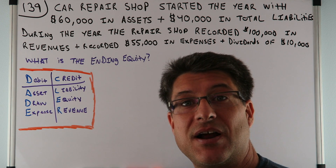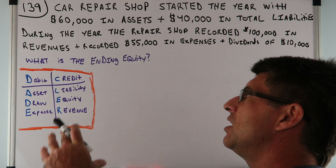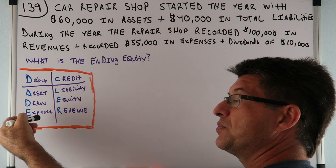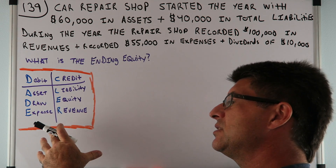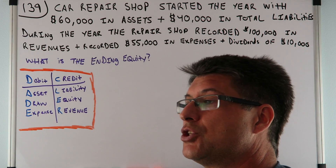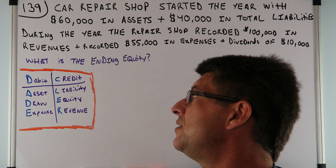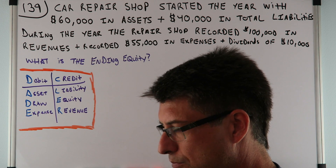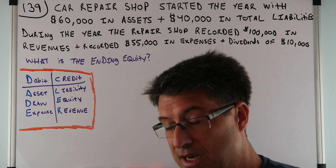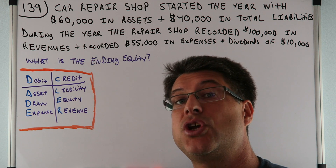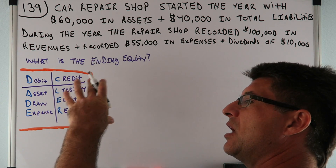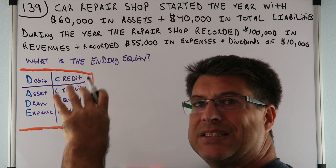All right, so we have our work cut out for us. But first, let's look at the DC AIDLER — Debit, Credit, Asset, Draw, Expense, Liability, Equity, Revenue. Now, this will help you mostly with journal entries. We're not doing any journal entries to figure out the ending equity, but DC AIDLER will help us. We're going to have to find beginning equity and the changes during the year. You should always, if you're doing any homework, write out DC AIDLER first — it's going to help you so much for any kind of problems.